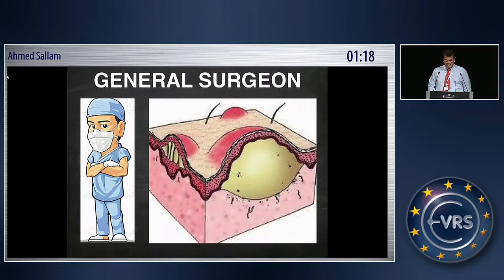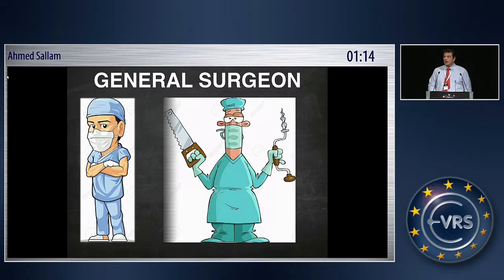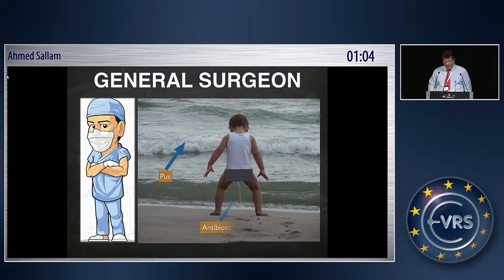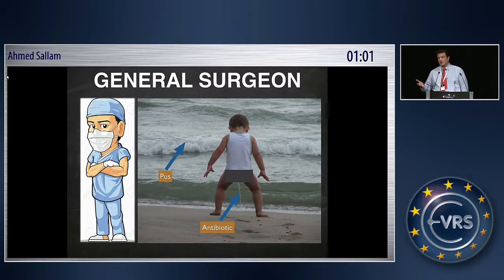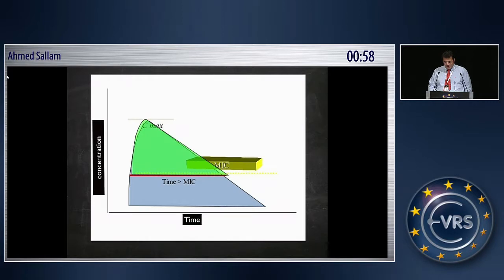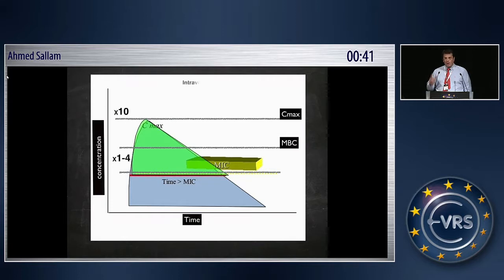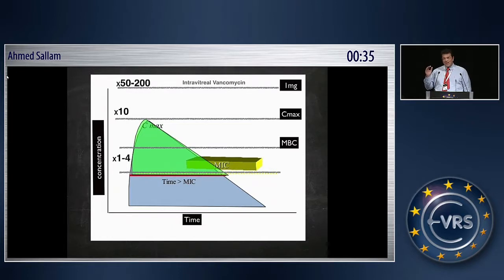The general surgeon mentality is: this is an abscess, it has to be drained. But this is not really true for the eye. If you give an injection into pus, you might think you're not doing anything — but that's not true. If this is the minimal inhibitory concentration (MIC), the minimal bactericidal concentration is four times the MIC, and the Cmax achieves ten times the MIC. Vancomycin 1 mg — not even 2 mg — achieves 50 to 200 times the MIC. That's not just a dose; that's a super-MIC dose.